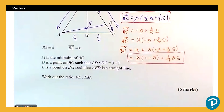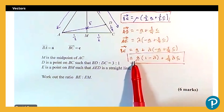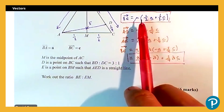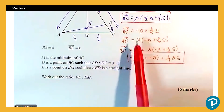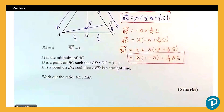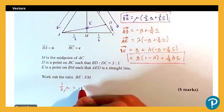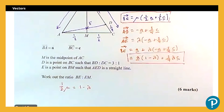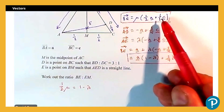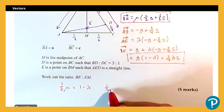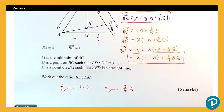Now I use these two expressions to write down two equations in lambda and mu. Looking at the coefficients of a: the first expression gives ½μ and the second gives (1 − λ), so ½μ = 1 − λ. Looking at the coefficients of c: the first expression gives ½μ and the second gives ¾λ, so ½μ = ¾λ.